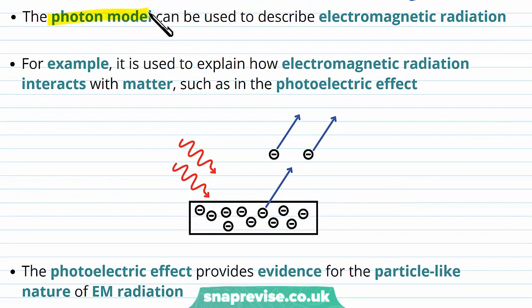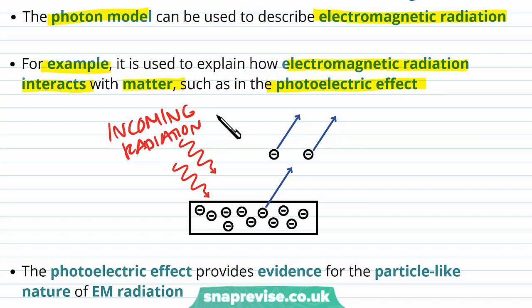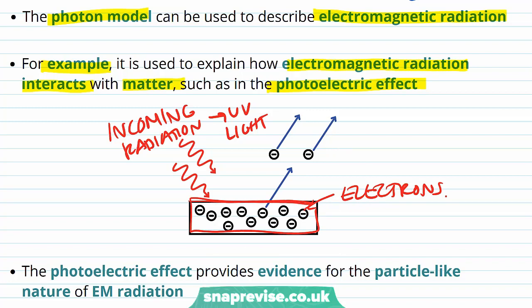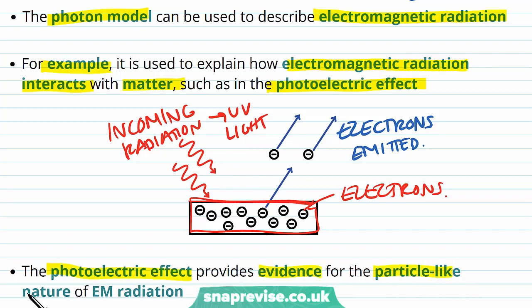The photon model can be used to describe electromagnetic radiation. For example, it's used to explain how electromagnetic radiation interacts with matter, such as in the photoelectric effect. In the photoelectric effect, incoming radiation — such as UV light — incident on a metal causes electrons to be emitted if the radiation is of a certain frequency. This phenomenon can only be explained using the photon model, providing evidence for the particle-like nature of EM radiation.